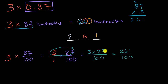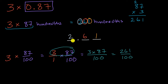It's always good to estimate. Here we have three times something a little bit less than one, so we'd expect a value a little bit less than three — and 2.61 meets that sniff test. If you got 26, 261, or even 0.261, that would be way off. Hopefully this is helpful.